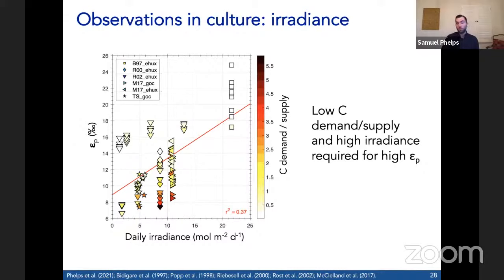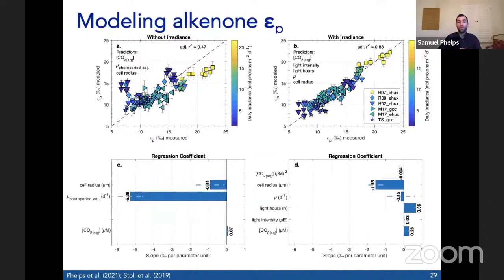So it seems that irradiance is really driving a lot of the variability in culture experiments and it's a parameter that we really do need to consider when we interpret sedimentary epsilon p data. We make a simple empirical model of the factors influencing EP and see what it takes to explain all the variance in epsilon p in the culture experiments. This follows the approach of a study led by Heather Stoll in 2019 that was really the pioneering breakthrough in this. Let's start with the left side - we're just including the parameters in the conventional diffusive model. So that's the cell size, CO2, and growth rate. When we include those variables, we can explain about 50%, less than 50% of the variance in epsilon p.